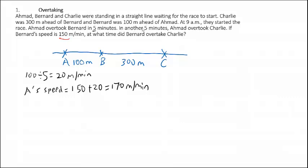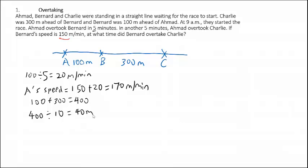We also know that Ahmad took another 5 minutes to overtake Charlie. So in total, Ahmad overtook Charlie in 5 plus 5 equals 10 minutes. The distance between Ahmad and Charlie is 100 plus 300, which equals 400m. Since Ahmad took 10 minutes to overtake Charlie, we can find the speed difference between Ahmad and Charlie by taking 400 divided by 10, which gives 40m per minute. This is the speed difference between Ahmad and Charlie.